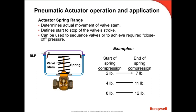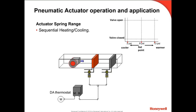The spring range is often applied to achieve tight close-off against water or steam flow. The air pressure or spring pressure at one end of the stroke or the other will hold a normally open or normally closed valve tightly closed. Spring ranges are also needed for valve sequencing to meet specific control strategies.